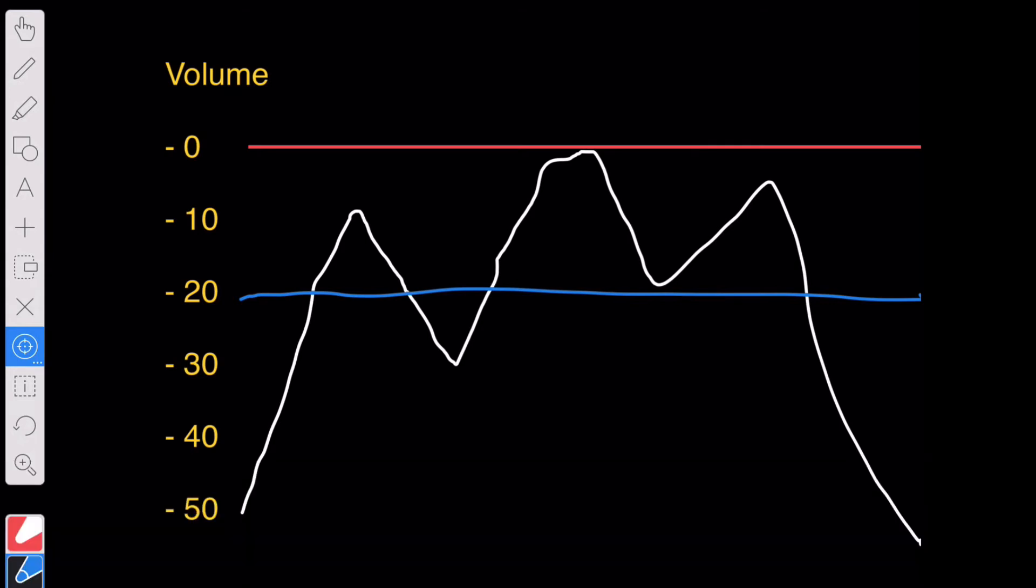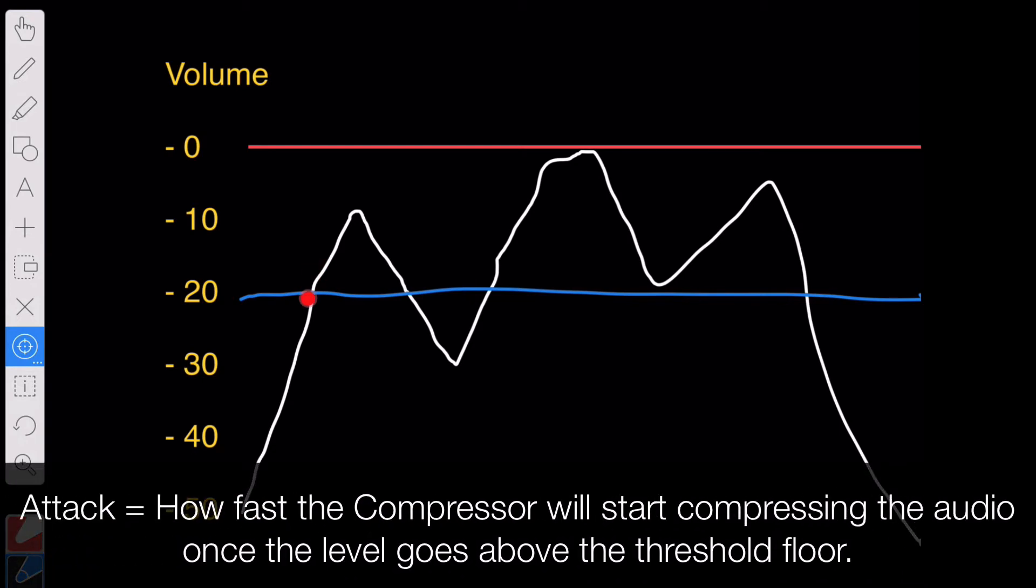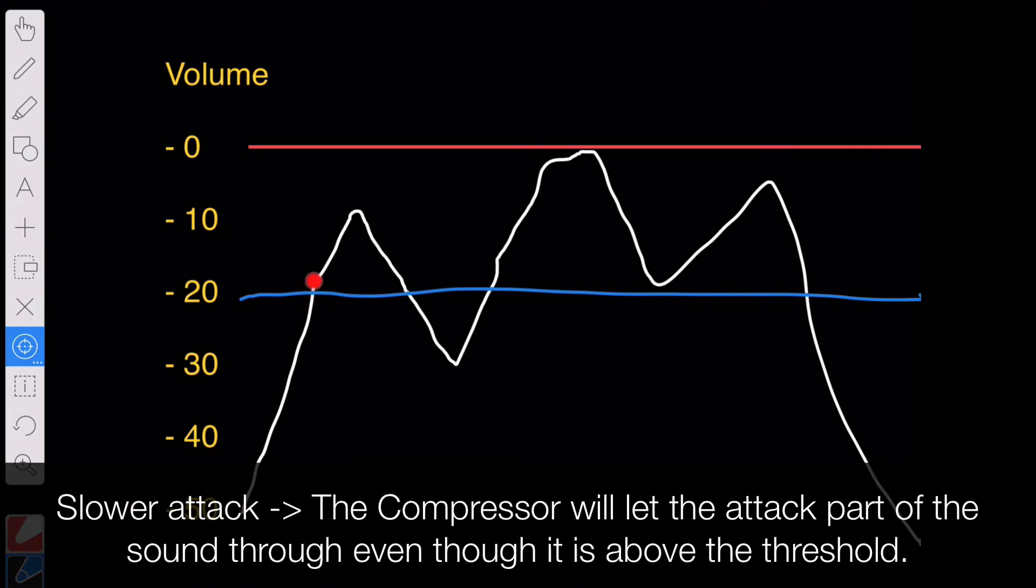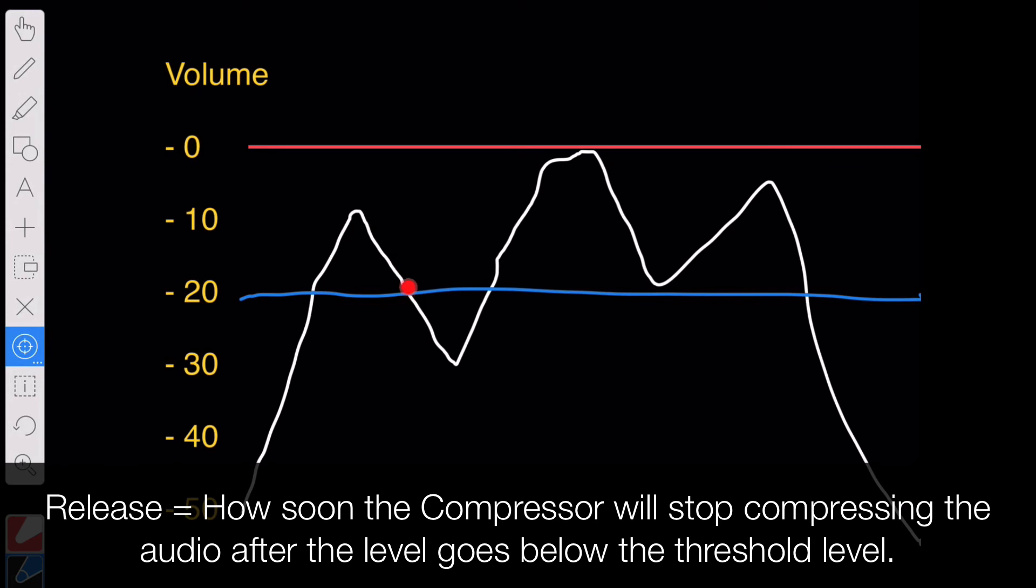And then you have the attack and release. Those are a bit more complicated, but basically, the attack is how fast the compressor will start working its compression after the audio has gone above this threshold level. So, if you set a slower attack, the compressor will let this start of the audio go through without compressing it. Let's say you set it at 50 milliseconds, for example. Then, from this moment and 50 milliseconds after, from here, the compressor will start working. And the release is the opposite, but at the end. So, how soon after the audio has passed below the threshold level, this blue line here, will the compressors stop compressing the audio?